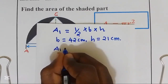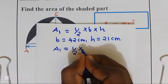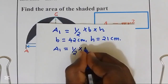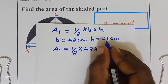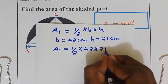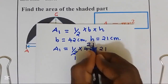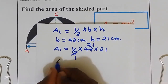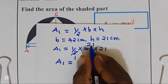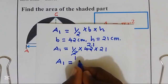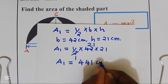Area 1 is equal to a half multiplied by base of 42 multiplied by the height of 21. A half of 42 is 21, so area 1 is equal to 21 multiplied by 21, which gives 441 cm squared.